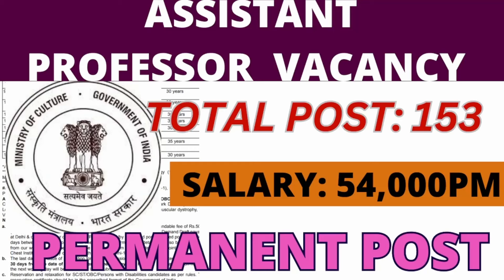In today's video, I'm going to cover the Assistant Professor vacancy from Cotton University. This is a permanent vacancy. You will get more vacancies than Assistant and salary-based. Total vacancies are very much: in Assistant it will be 100, in Associate it will be 40 plus, and in Professor it will be 20 plus. So, you will get a good number of vacancies.